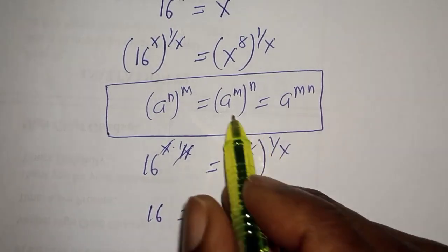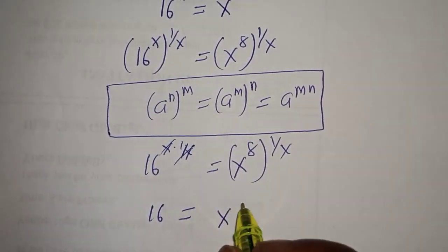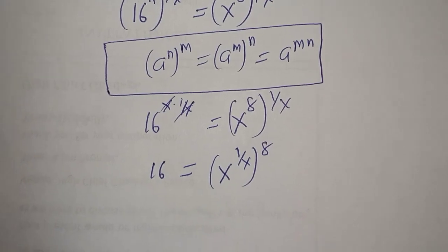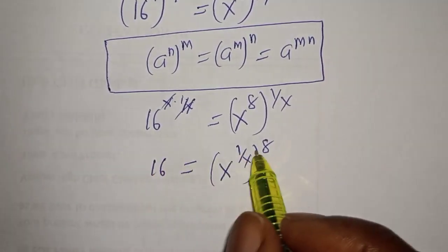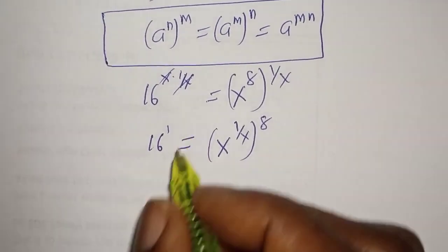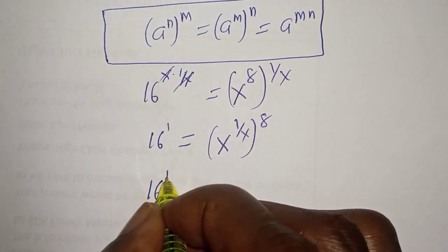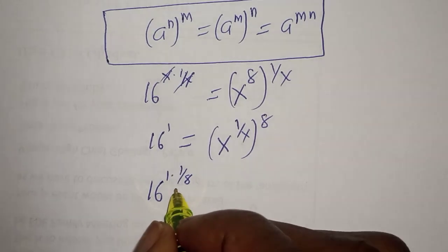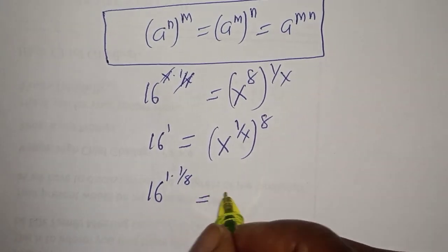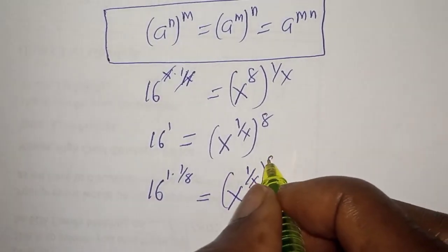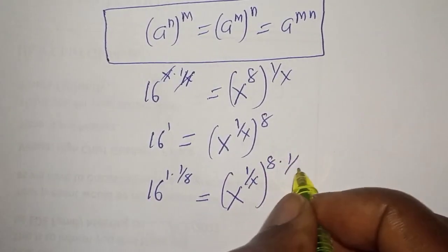16 will be equal to — from this rule — s raised to power 1 over s, to the power of 8. Then, let's multiply the exponent of both sides again by 1 over 8. We have 16 raised to power 1 multiplied by 1 over 8, so this is equal to s raised to power 1 over s, to the power of 8 multiplied by 1 over 8.